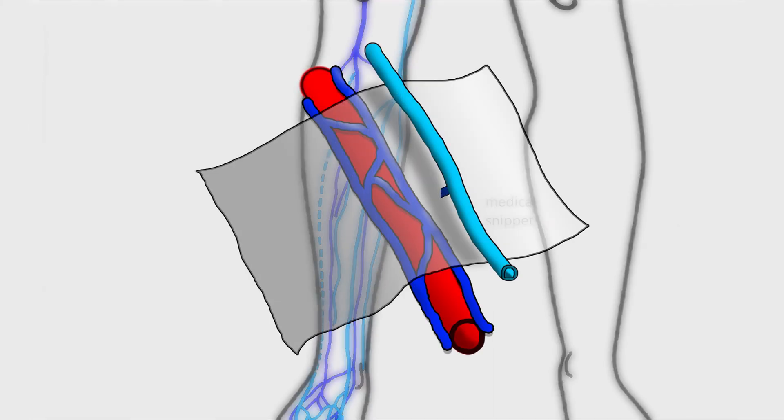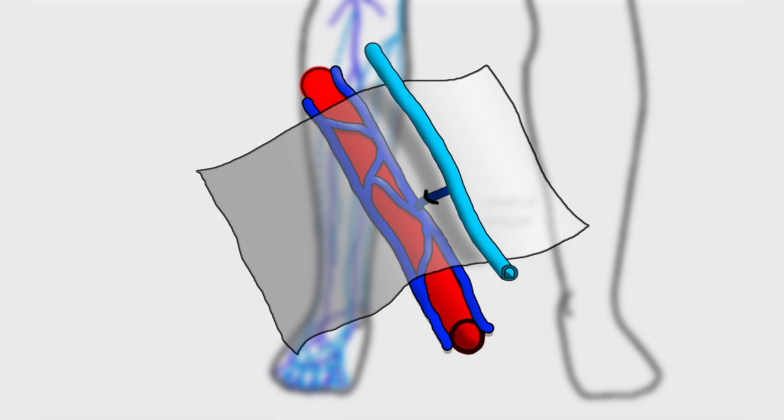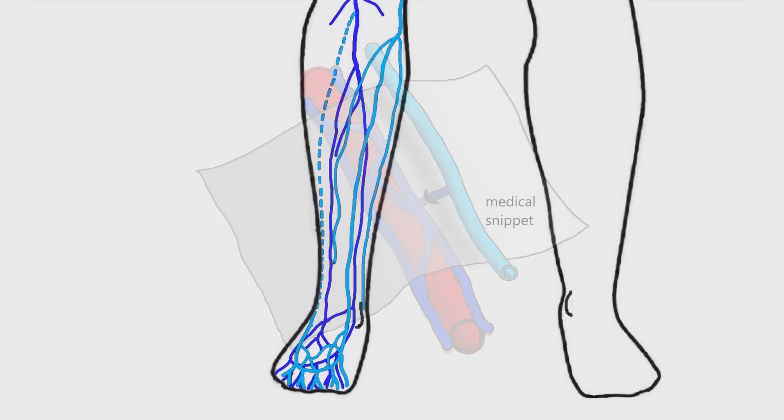There are many perforators connecting the superficial veins to deep veins. They drain blood from the superficial system to the deep system, but we will discuss only the important ones. In the foot, the perforators are unique as they drain blood from deep to superficial system. These are medial and lateral ankle perforators, which drain blood from the deep system to the greater and small saphenous veins, respectively.